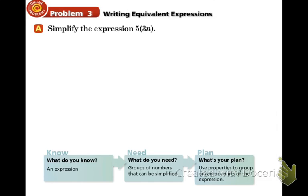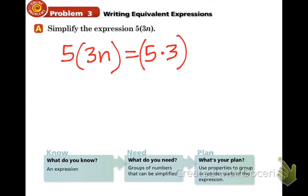We need to simplify this expression. We have the expression 5 times 3n. We can use the associative property to group the like terms: 5 and 3 are like terms with each other because they're both just regular numbers. And then we can use our order of operations to do 5 times 3, which is 15. 15n is the answer.